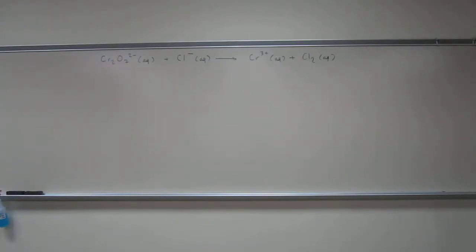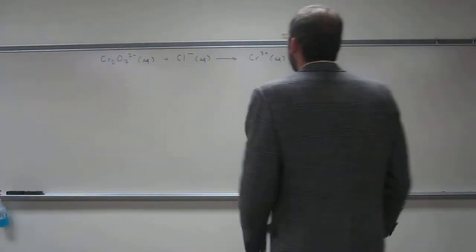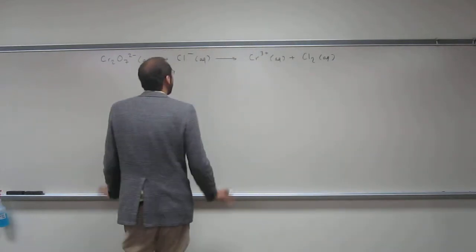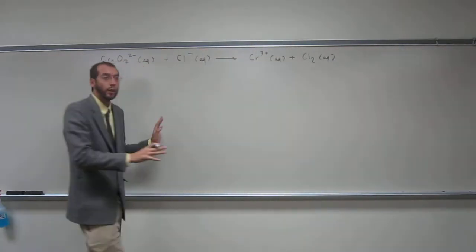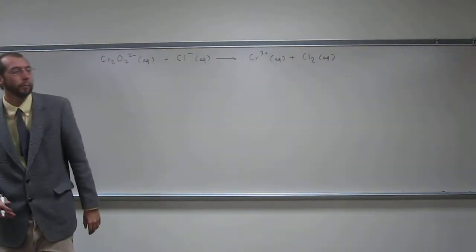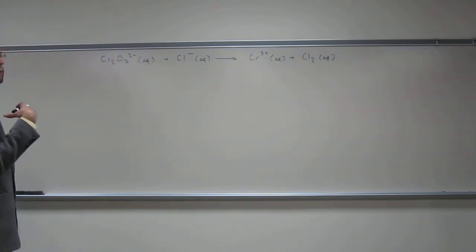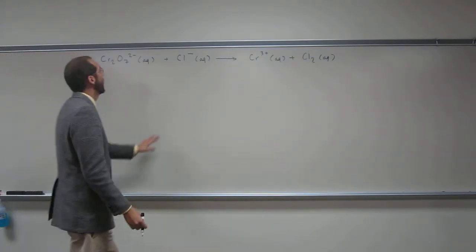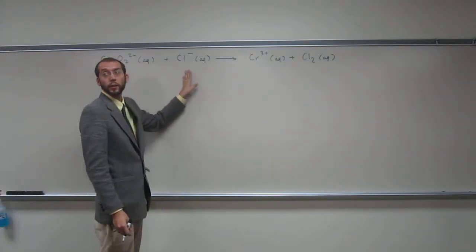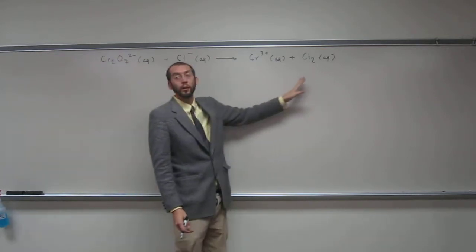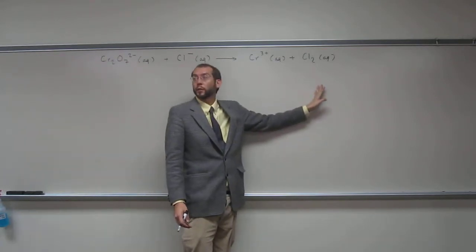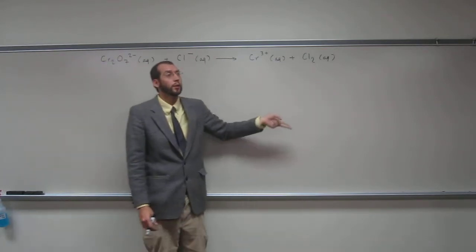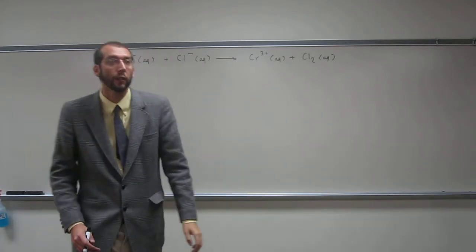Like we were just saying, today we're going to learn how to balance redox reactions. Hopefully you can look up here and see that this is already a redox reaction. The way I can tell really quickly is because the oxidation number of chlorine here is negative one, and the oxidation of chlorine here is zero. So I know the oxidation number changed, which means we have a redox reaction.